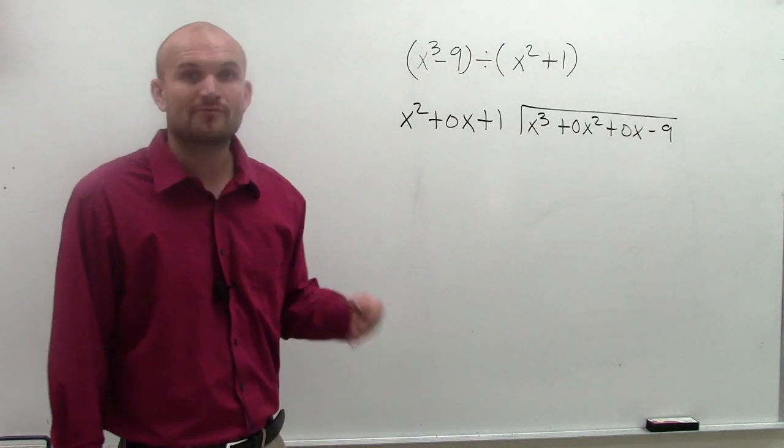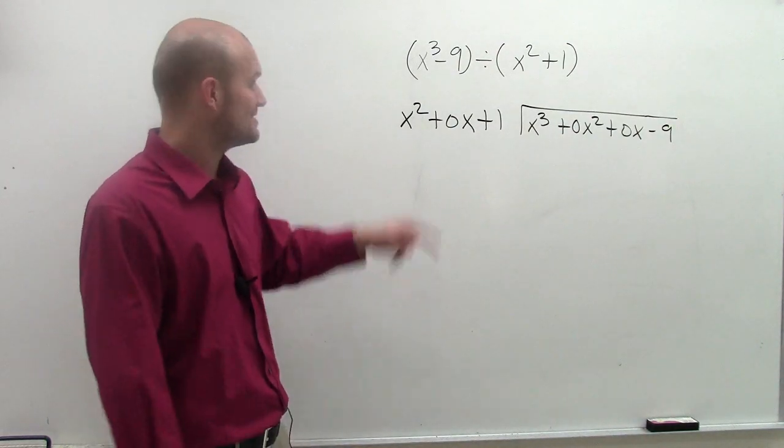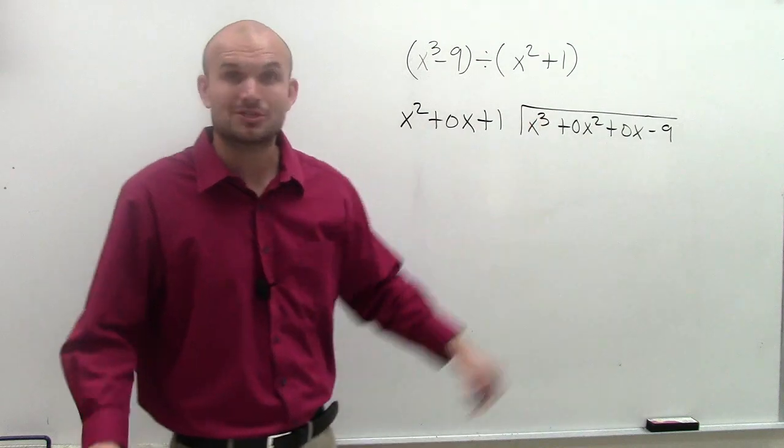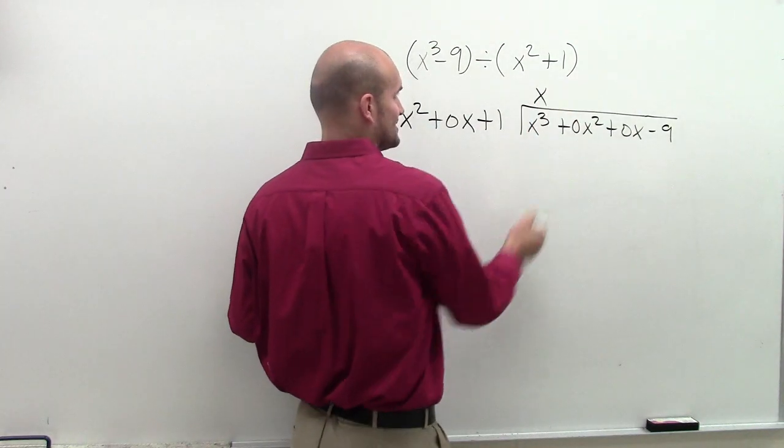However, the algorithm for division of a polynomial is the same. x squared goes into x cubed how many times? Goes in there x times. So you write x times x squared is x cubed.